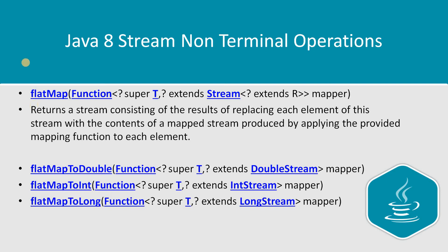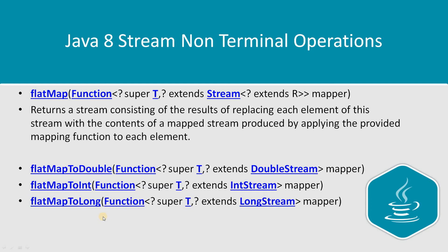There are different variants of flatMap available: flatMapToDouble, flatMapToInt, and flatMapToLong. Similar to map, flatMap also takes a Function, which is a predefined functional interface, as input.